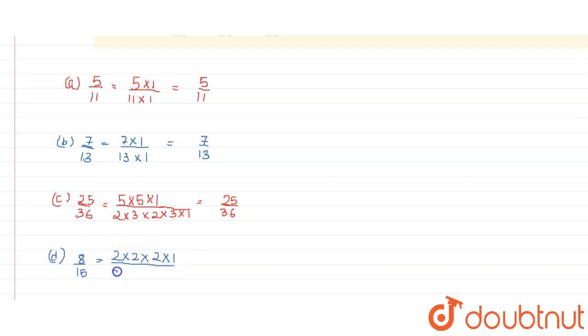And 15, we get 3 into 5 into 1. Again, they don't have any common factor except 1, so they are already in their simplest form.